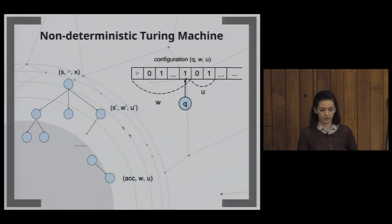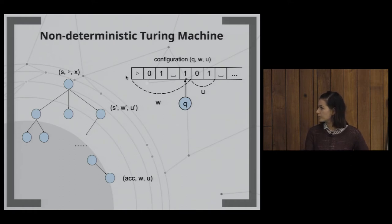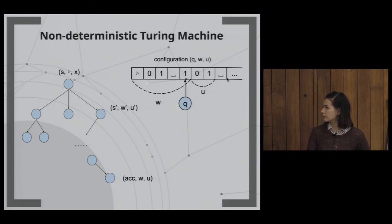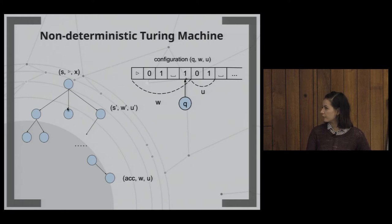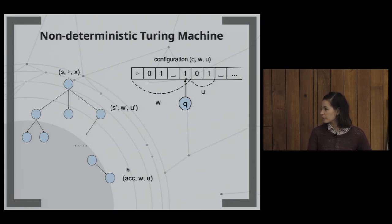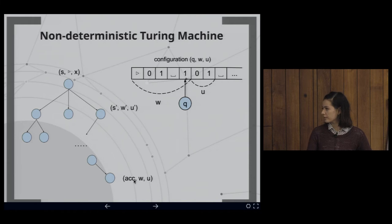We can draw a computational tree where each node is a configuration — the state plus the tape content split at the tape head. Our transitions give all possible next configurations, and a computation is a path in this tree ending at an accepting state.